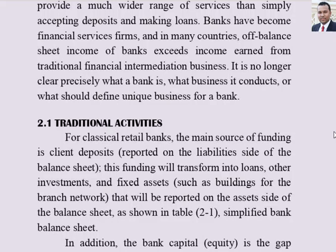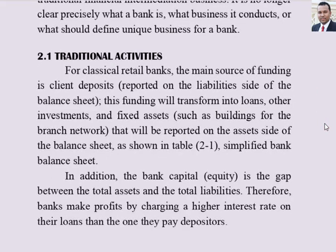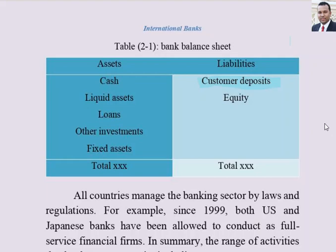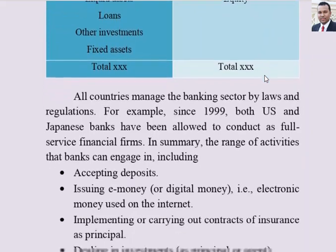When we talk about traditional activities, the classical retail banks' main source of funding is client deposits. Deposits are reported on the liability side of any bank's balance sheet, while loans are reported on the asset side. This is illustrated in Table 2.1: a simple bank balance sheet showing assets and liabilities.